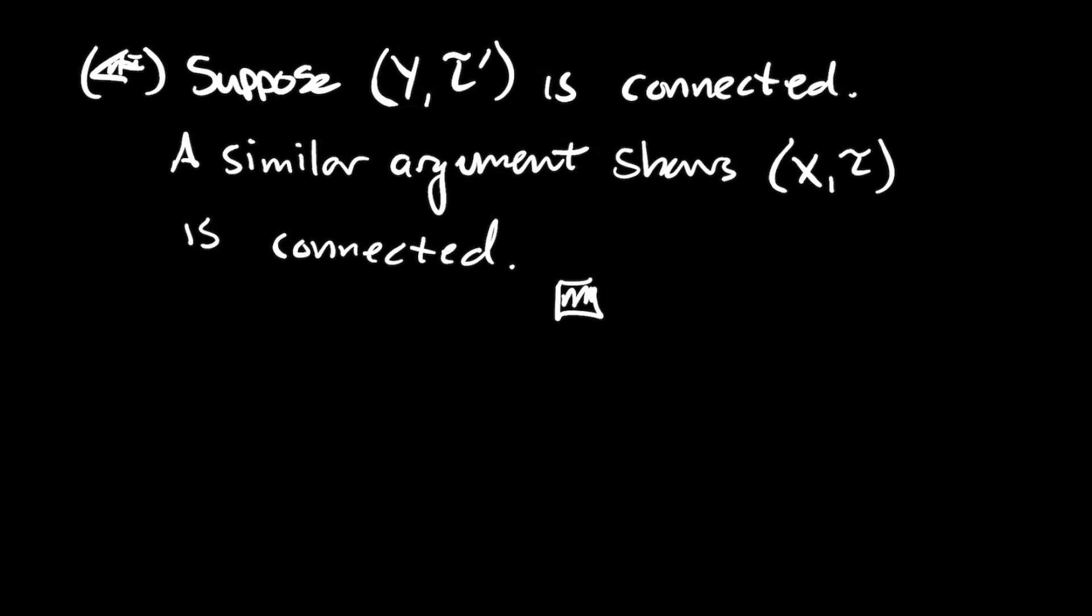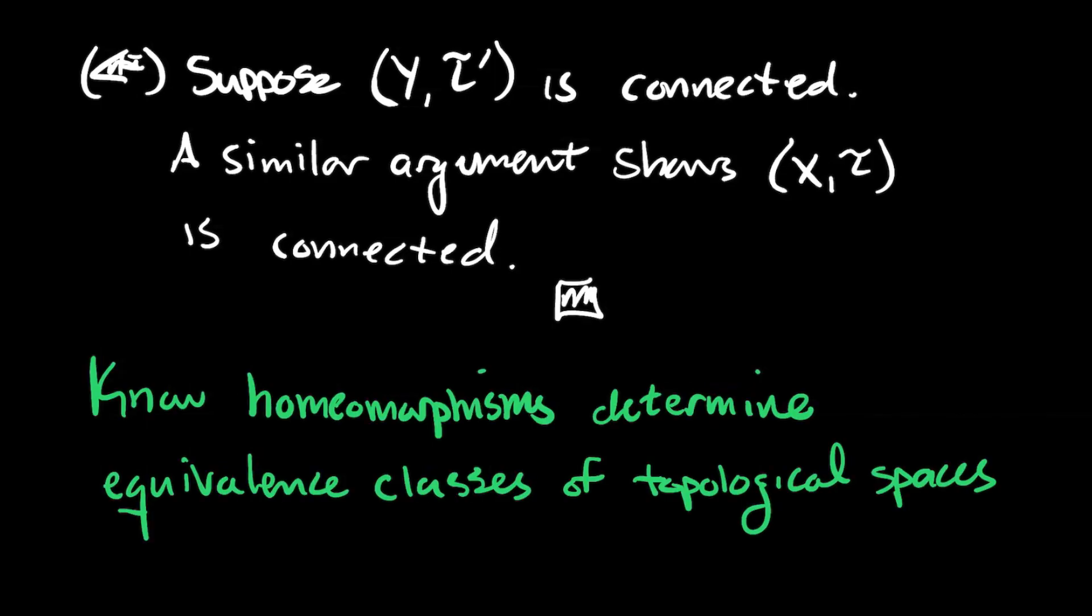Now, something that I didn't write down, but being connected, it depends on both the set and the topology, not just the set nor just the topology. It depends on both of them. So just be very careful with that. All right, so then what did I mean, again, in the beginning about connectedness is a topological property?